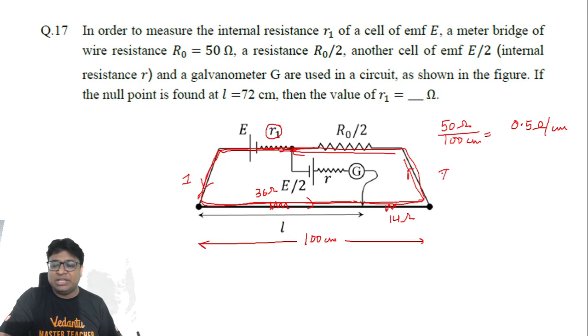The current flowing in the circuit can be very easily written as net emf of this loop divided by total resistance. So the net emf of this loop would be equal to E only, and the total resistance would be given by r1 plus 36 plus 14 plus r0/2. So that will become r1 plus 50 plus 25 is 75. So that is the current.